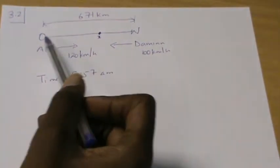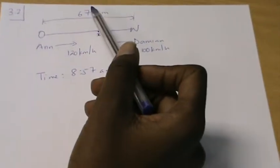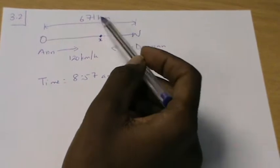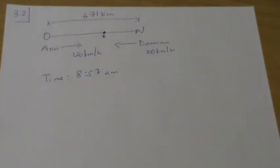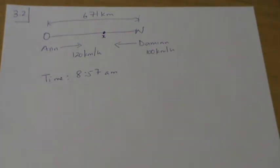We know that the total distance from Ondangwa to Ventuk is 671 kilometers. Don't worry about the towns — if I give you towns like Ventuk and Luderitz or Okahanja and Ventuk, I will tell you how far apart they are. You don't have to memorize the distances between all the towns in Namibia.